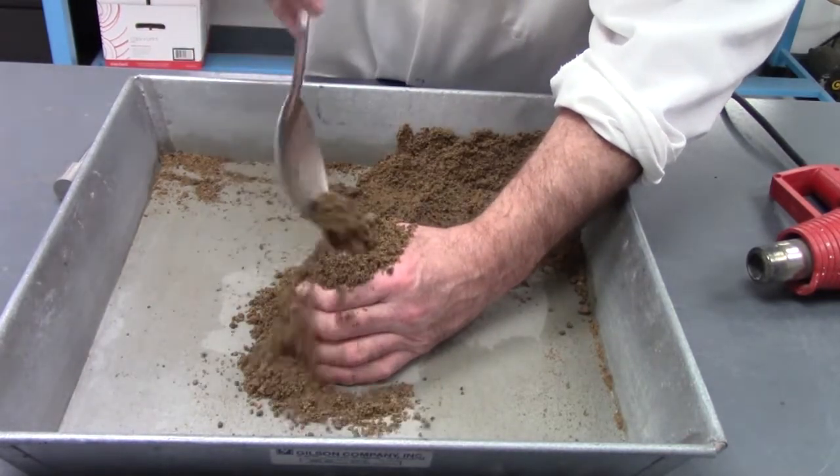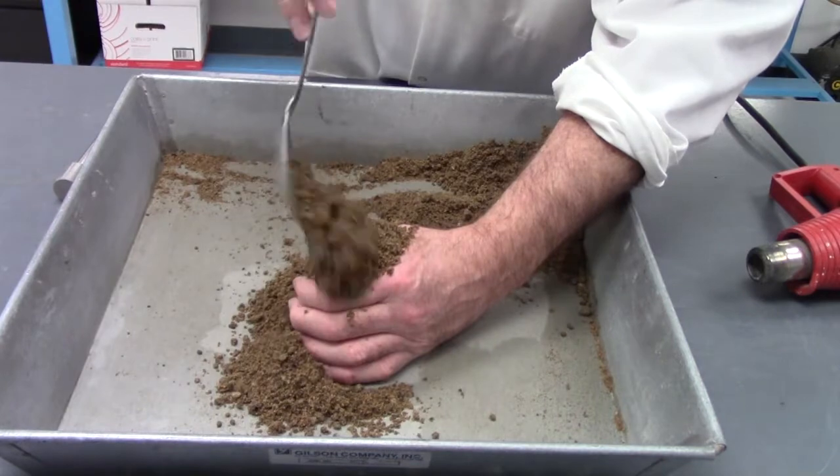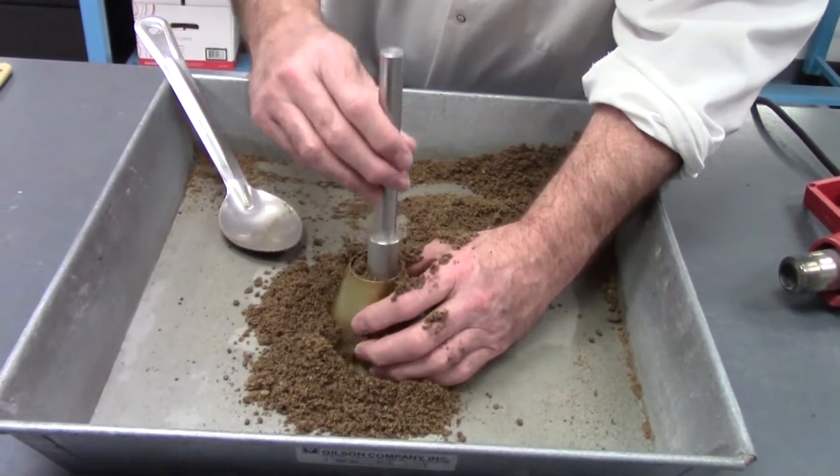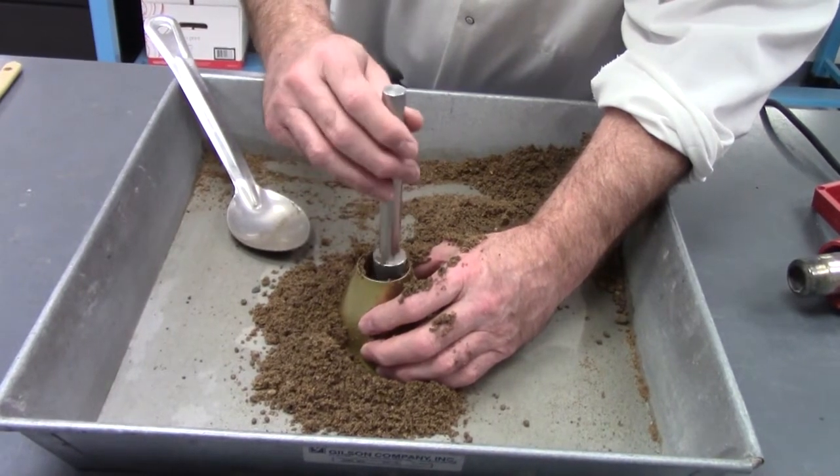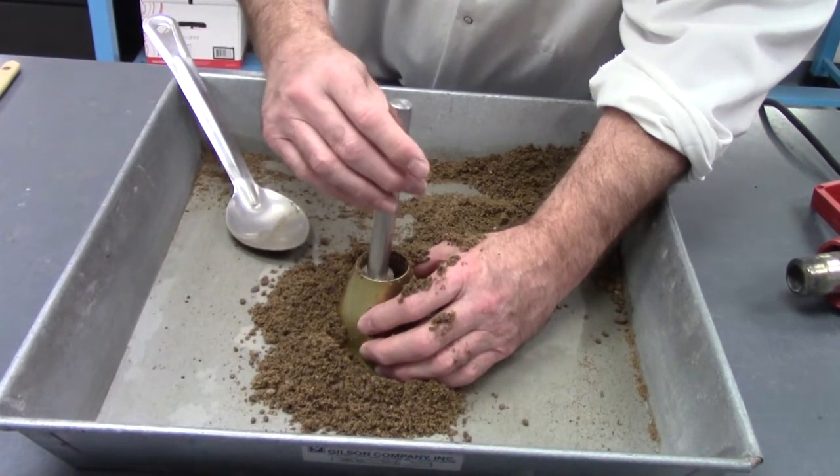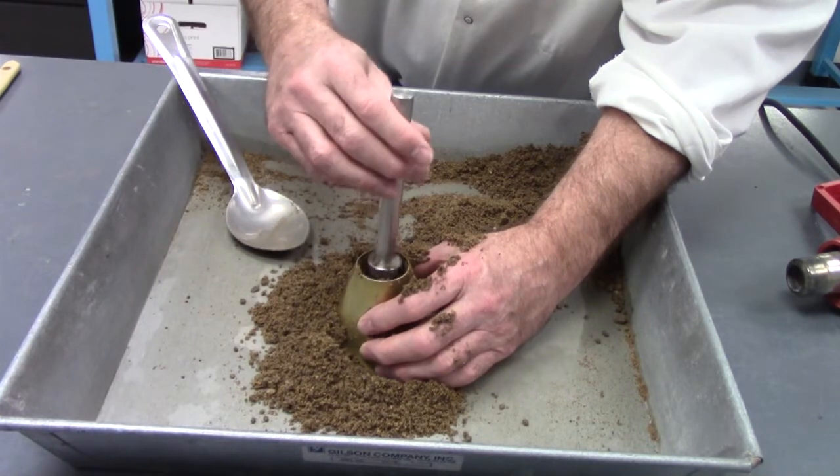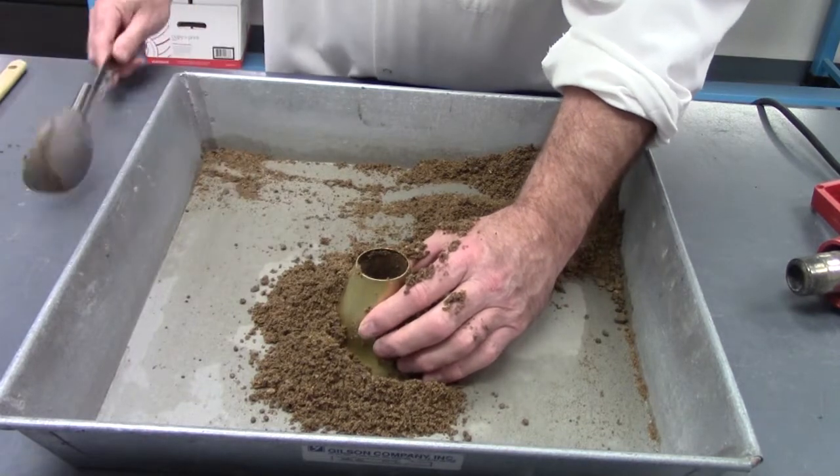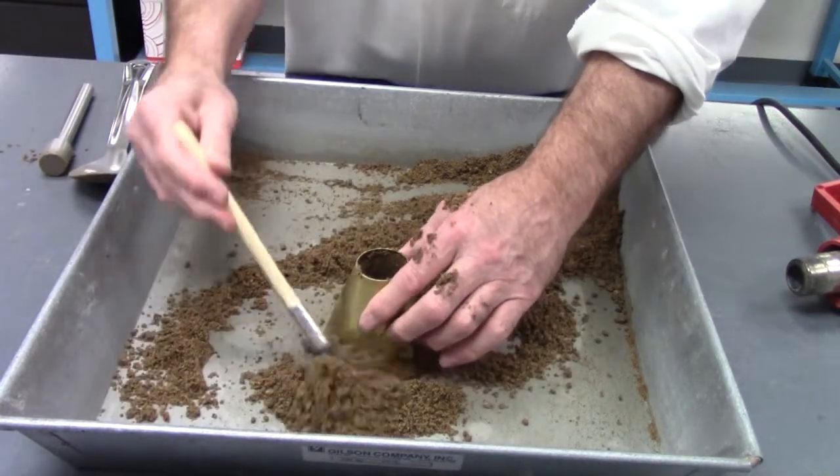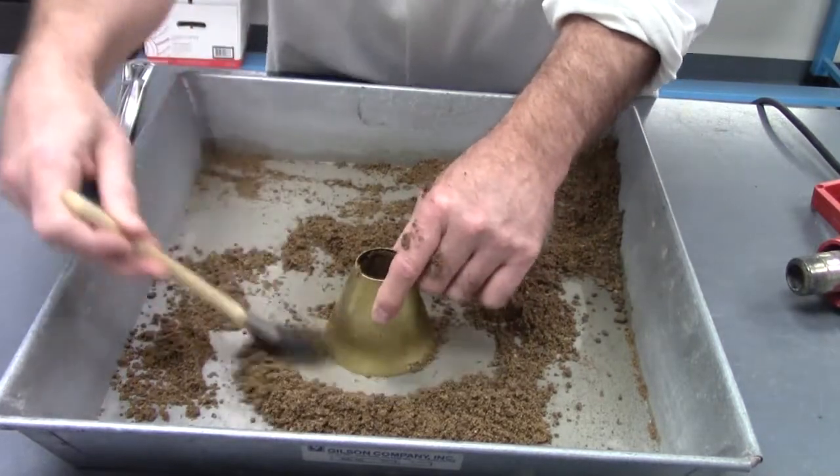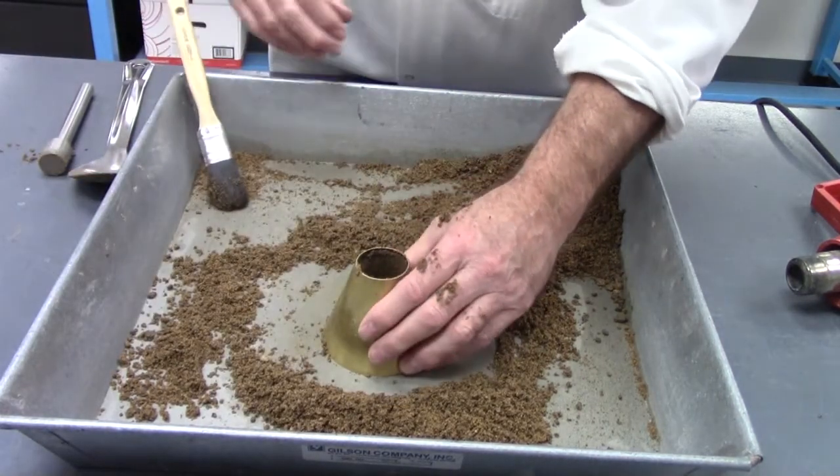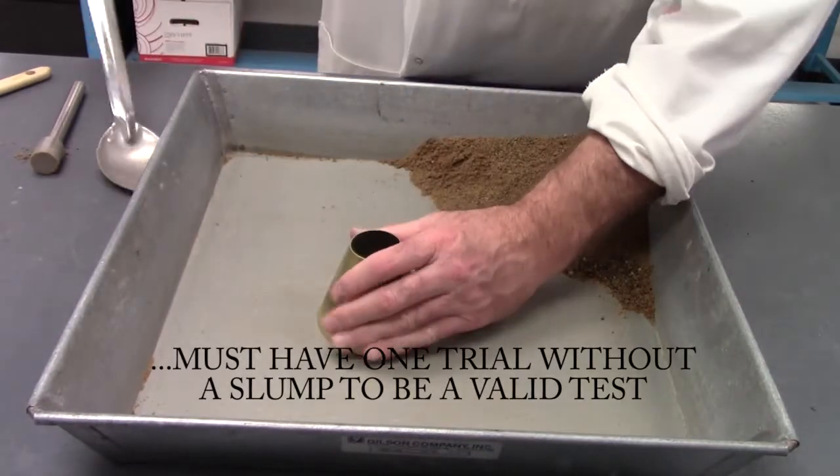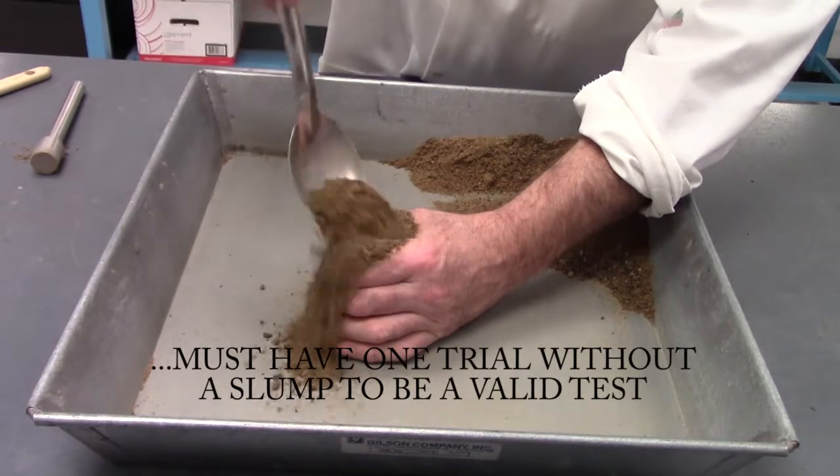You're going to fill the cup overflowing, tamp it down 25 times, spread it over the entire surface. You're going to brush away and remove all the excess material around the base of the cone. And it didn't collapse, so we reconsolidate material and try again.